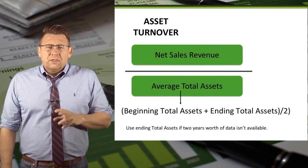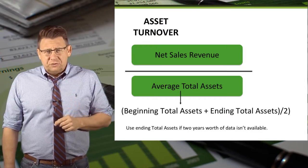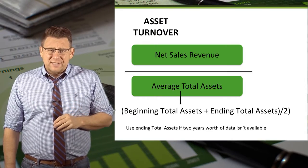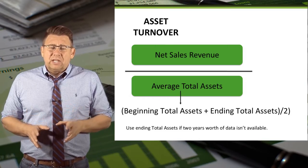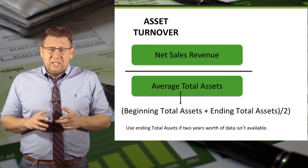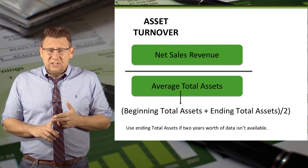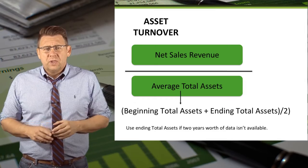The formula is net sales revenue divided by average total assets. The average total assets is calculated by taking the beginning total assets plus the ending total assets and dividing by 2.